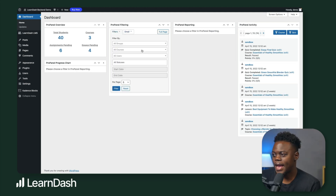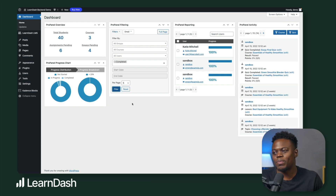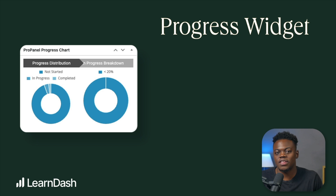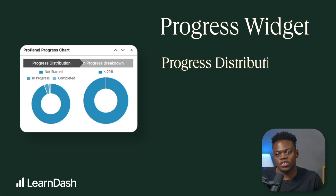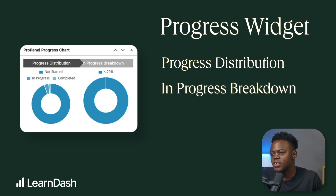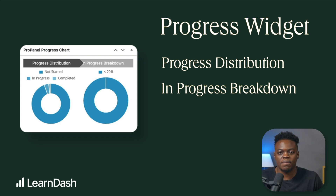Now I'm going to produce some filter data. This leads me to the ProPanel progress chart. You can visualize overall course progress with informative charts including a progress distribution chart and an all-in-progress breakdown chart. Once the ProPanel reporting widget is set to filter by group, course, or user, the charts will appear. On the left is the overall progress distribution chart, showing user or course distribution between not started, in progress, and completed statuses. On the right is a breakdown of all users or courses that are in progress. By default, progress is distributed in 20% increments — 20%, 40%, 60%, 80%, and 100% — and these increments can be changed using filters discussed in the developer section found in our documentation.